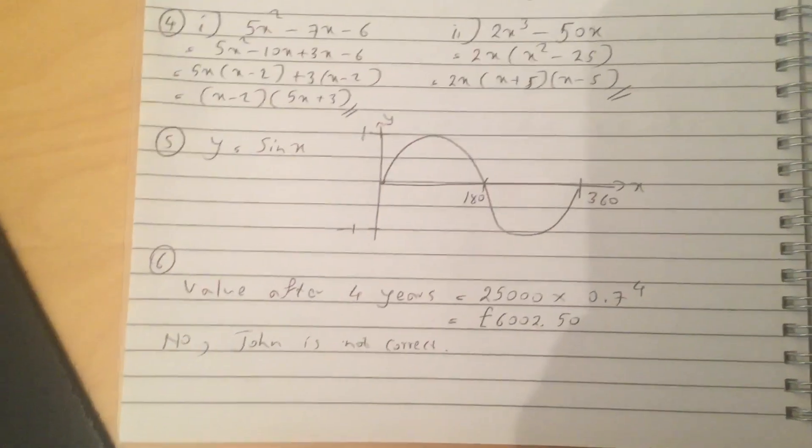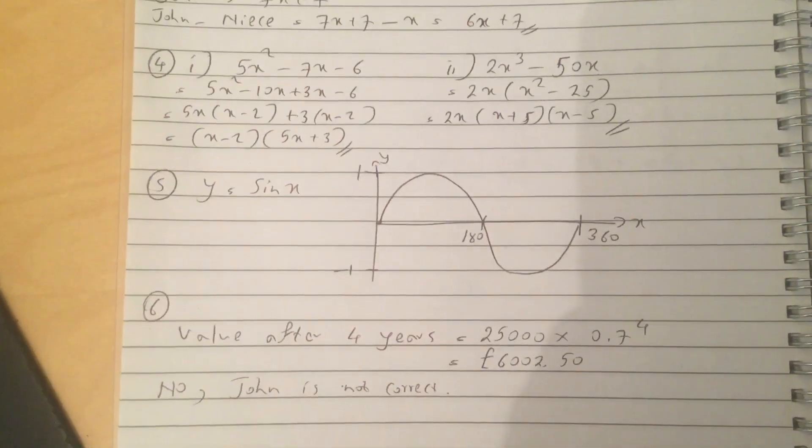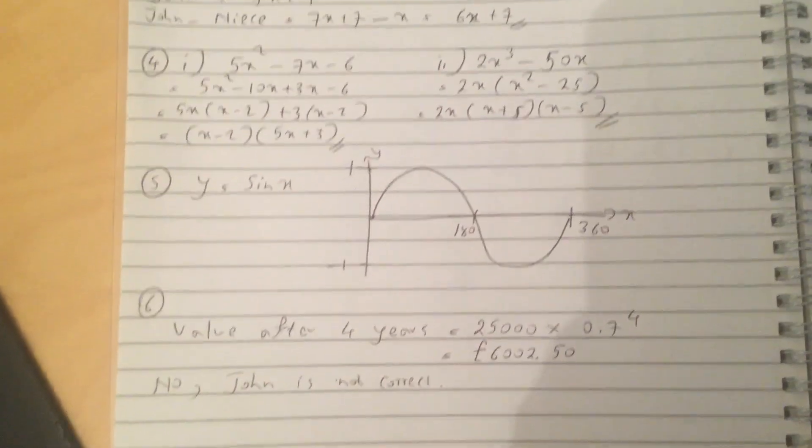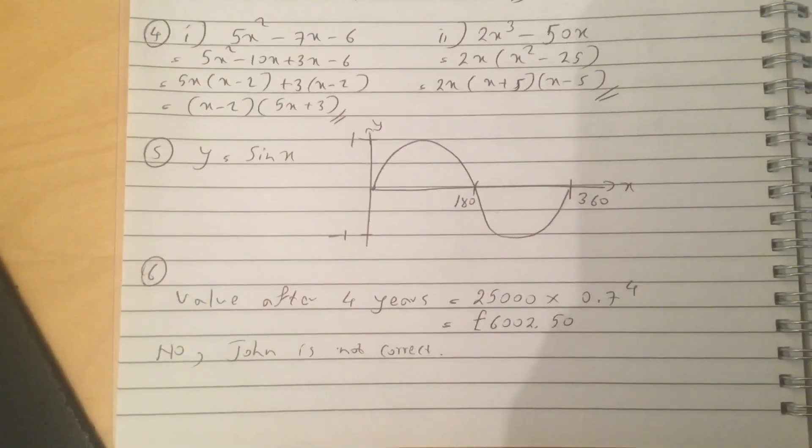So question 6, value after 4 years is 25,000 times 0.7 to the power of 4, which is 6,002 pounds and 50, so John is not correct.